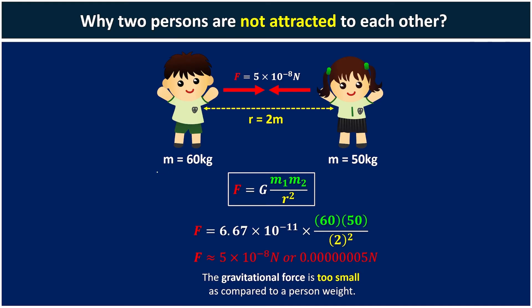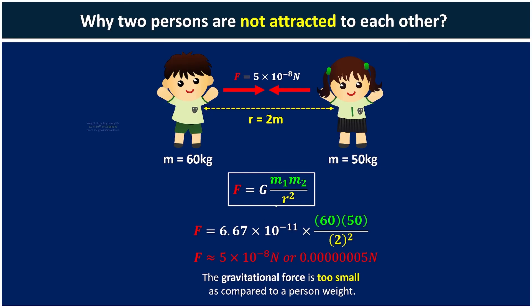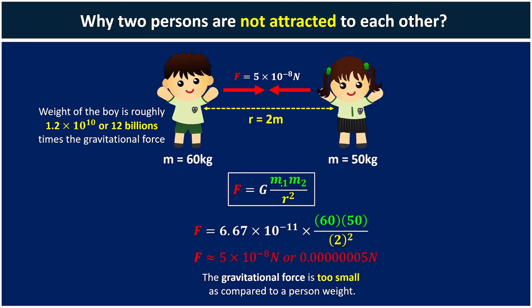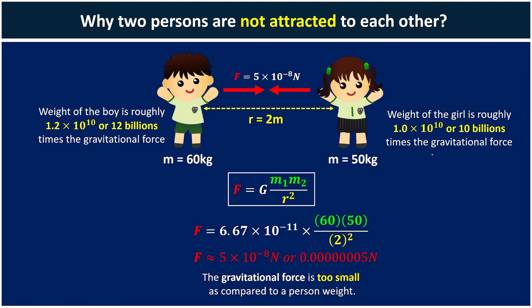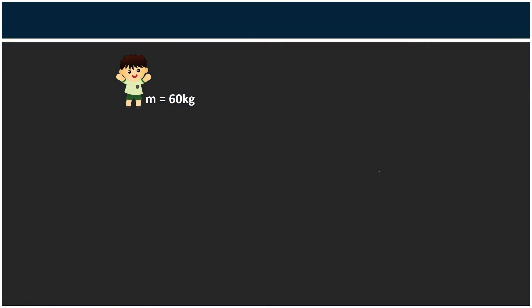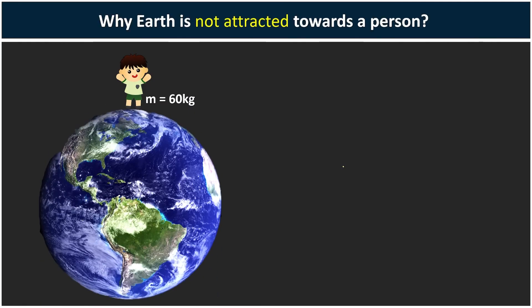We can say the gravitational force is too small compared to a person's weight. Using W equals mg, with mass of 60 kg and gravitational acceleration of 9.81, you are roughly 600 Newtons. So in fact, the weight of the boy is roughly 12 billion times the gravitational force between the two people, and the weight of the girl is also about 10 billion times stronger than that gravitational force.